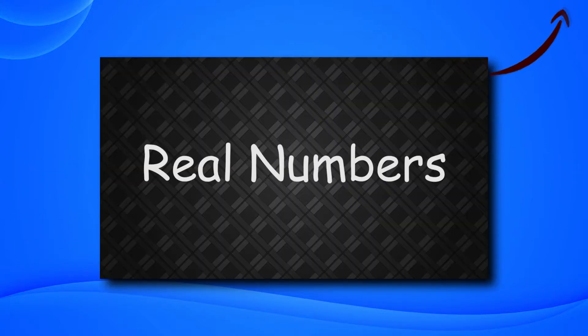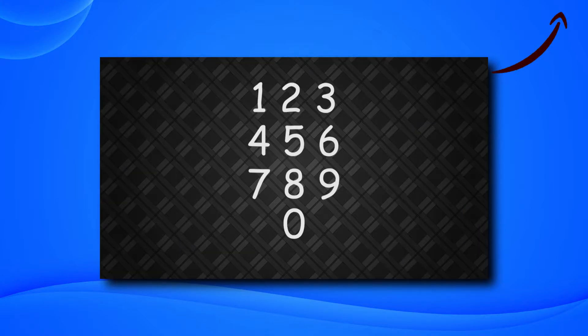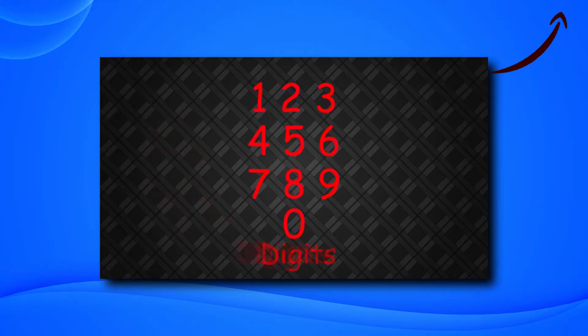We have already seen in our previous video that all numbers are formed by using and rearranging the 10 symbols called digits: 1, 2, 3, 4, 5, 6, 7, 8, 9, and 0.